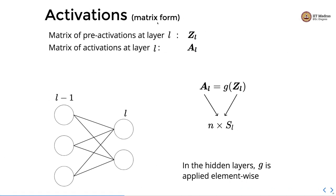We can write the activation also in matrix form. The matrix of pre-activations at layer L is Z^L, and the matrix of activations at layer L is A^L. Z^L, the matrix of pre-activations, is passed through a non-linear activation to obtain the activation matrix A^L, which has shape N×S_L. Note that in the hidden layers, G is applied element-wise.